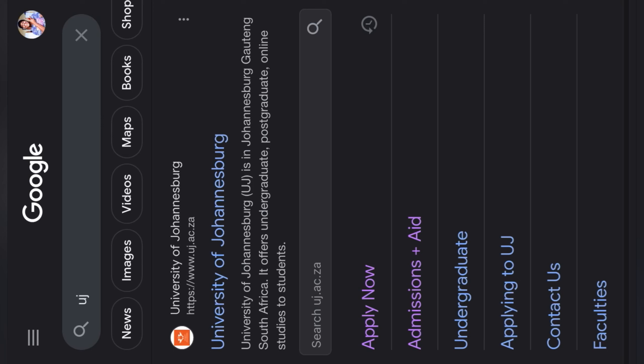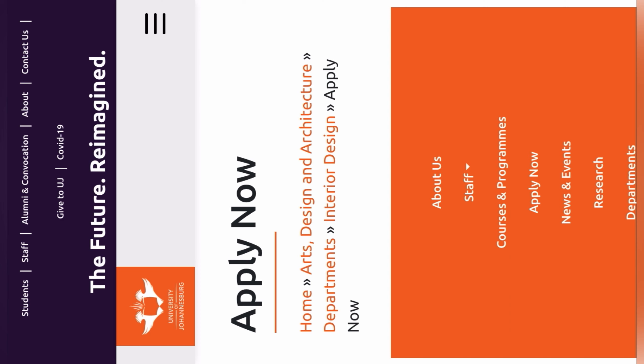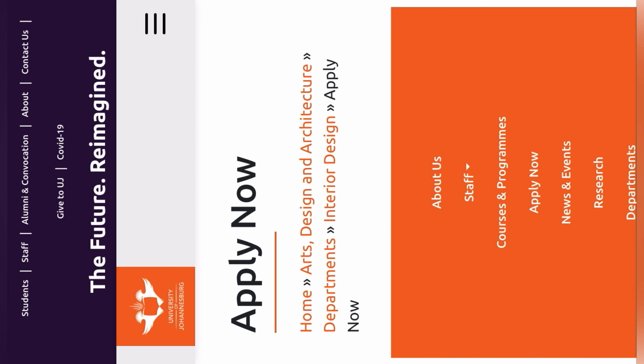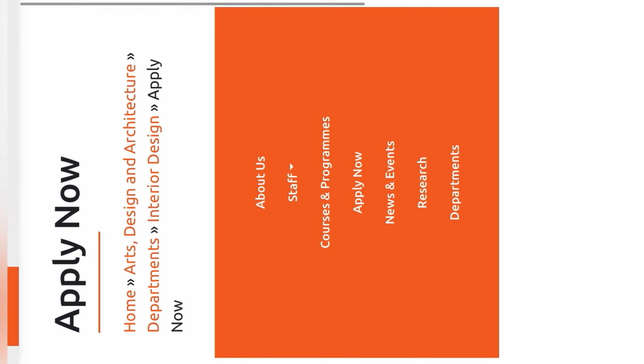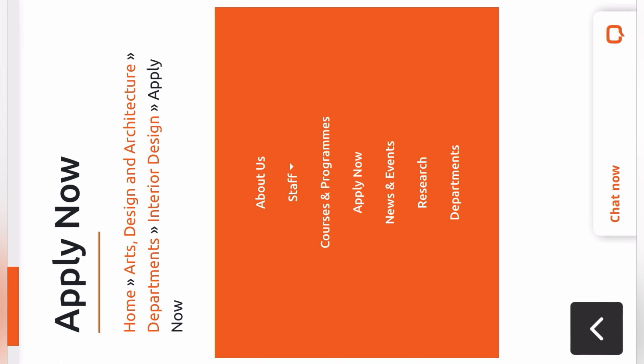To make things quick and simple, you're just going to type UJ or University of Johannesburg on your Google Chrome app, and this is what you're going to come across. Then you're going to click the Apply Now section. There's an orange banner — on number four, they say Apply Now. You click there.